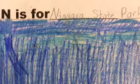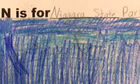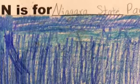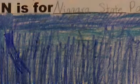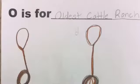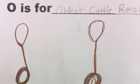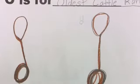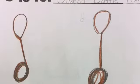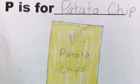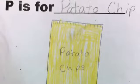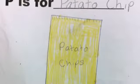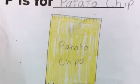N is for Niagara State Park because Niagara State Park is the oldest state park. O is for Oldest Cattle Ranch because the oldest cattle ranch was held in New York. P is for Potato Chip because the first potato chip was invented in 1853.